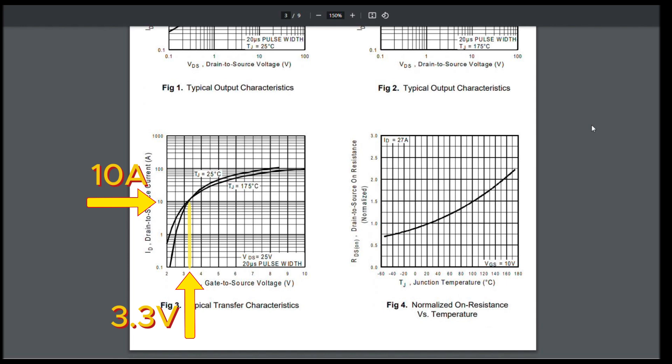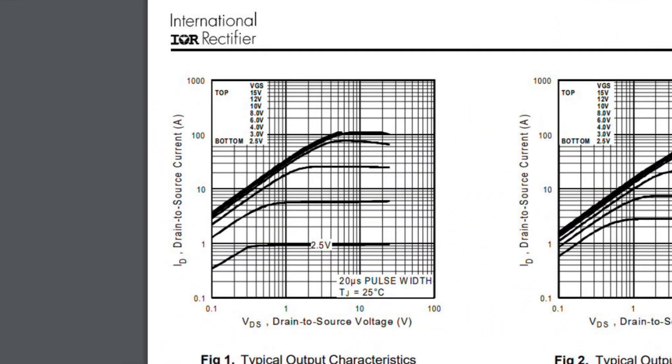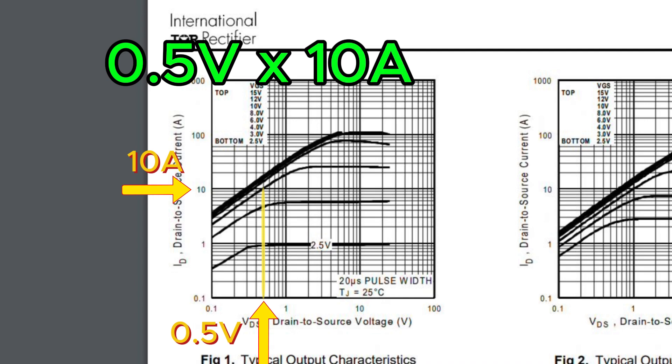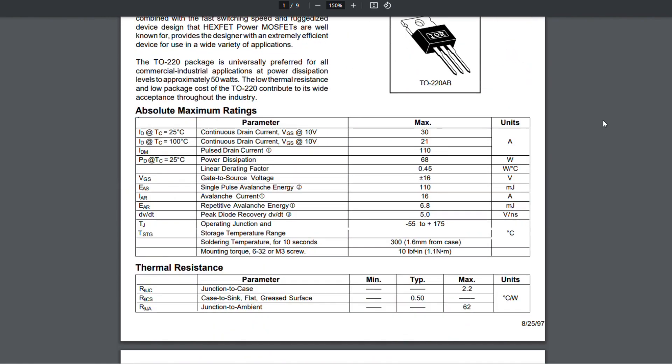But there is a catch. As you can imagine, such current will certainly heat the transistor up. Question is, how much? To figure that out, we need to have a look on the chart above. For clarity, let's say our gate source voltage is 4 volts. In such conditions, 10 amps will cause voltage drop across transistor of around 0.5 volts. As you may know already, power equals voltage times amperage, so we can expect around 5 watts of heat to appear due to current flow. Good to know, but why should we care?